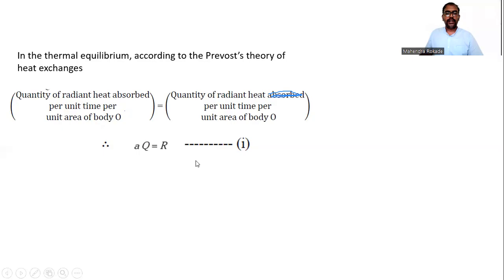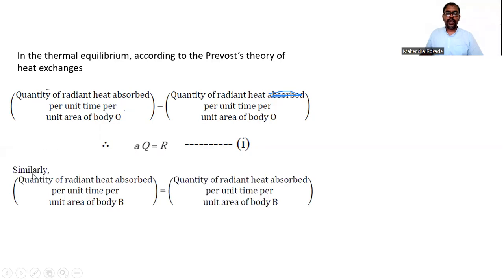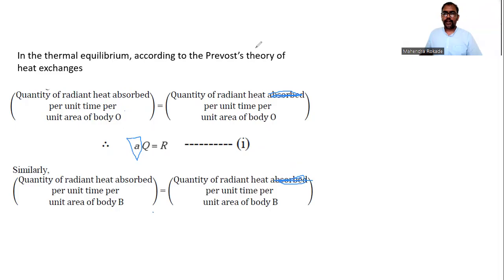Similarly, we write the same equation for body B, the black body. The quantity of radiant heat absorbed per unit time per unit area equals the quantity of radiant heat emitted per unit time per unit area by body B. For a black body, the coefficient of absorption A equals one, so we get Q = R_B. This is equation two.